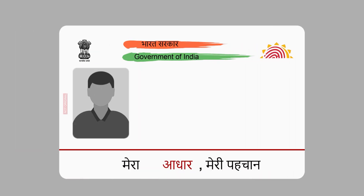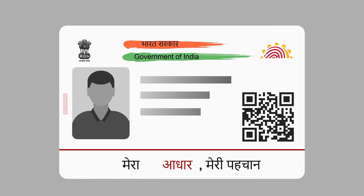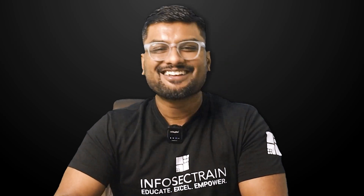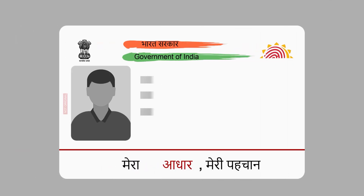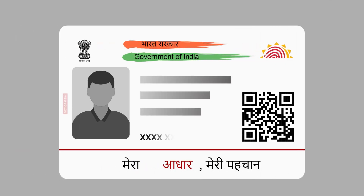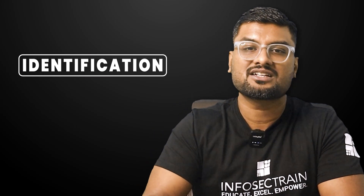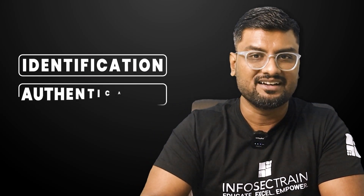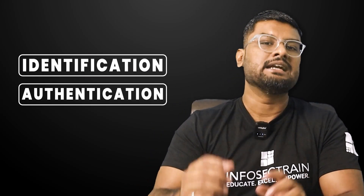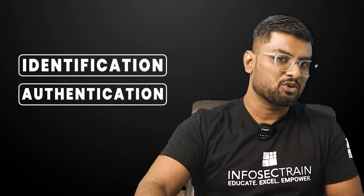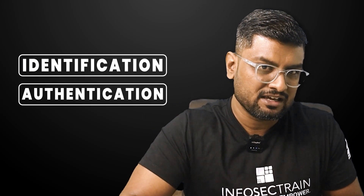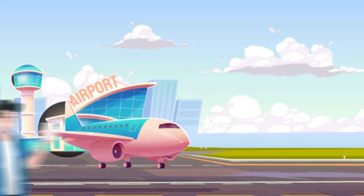He then showed his Aadhaar card to prove he is the same Mukul who claimed to be. That is called authentication — using something he has to verify his identity.